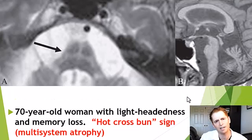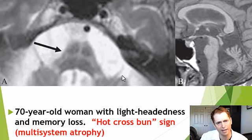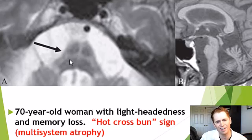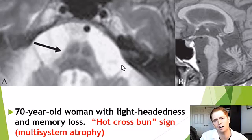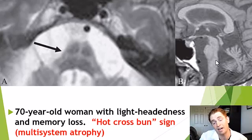These MRI scans of the 70-year-old woman with lightheadedness and memory loss show a cross in the pons — known as the hot cross bun sign — consistent with multi-system atrophy. It's caused by loss of myelinated fibers in the pons, and this disease can cause autonomic dysfunction leading to low blood pressure and lightheadedness. On the right side of the image, there is atrophy of the cerebellum, which can also occur in multi-system atrophy and other diseases.